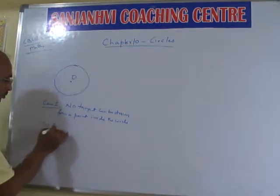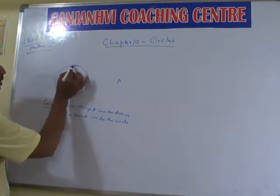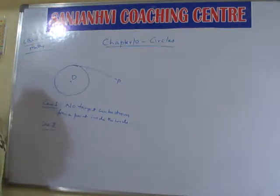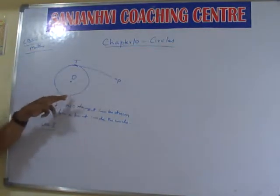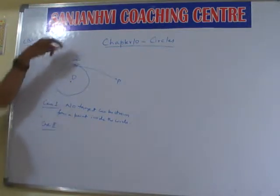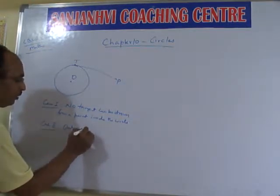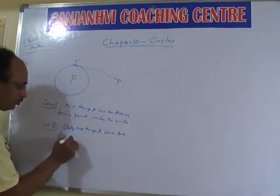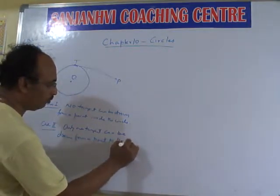Case 2. Suppose any point P outside is there. From this point P you can draw only one tangent at a point of contact. You can draw another tangent to this side, but at this particular point only one tangent can be drawn. So only one tangent can be drawn from a point to the point of contact.